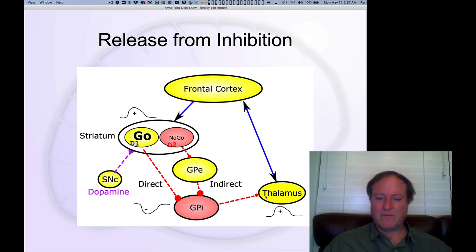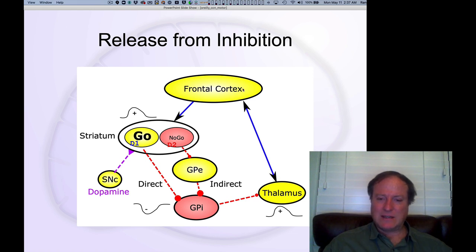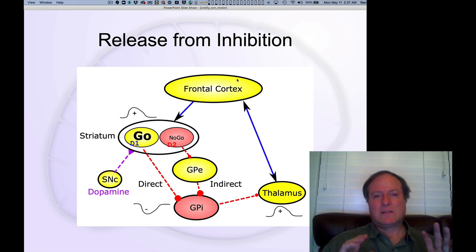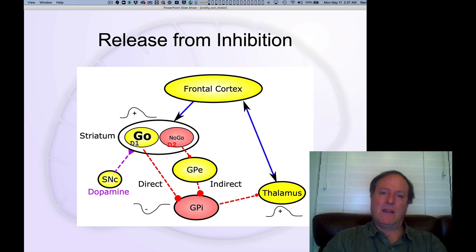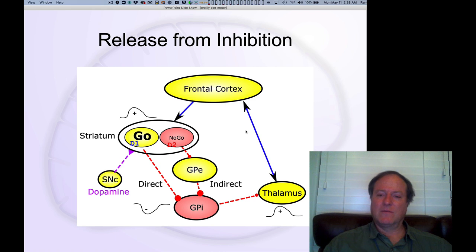These cells have been previously inhibiting the thalamus because they've been tonically active. When they get inhibited themselves, they release the thalamus from that tonic inhibition, and therefore the thalamus gets excited. This completes the bidirectional excitatory loop between the thalamus and the frontal cortex, which is really what we think is the start of this action taking over and driving behavior through downstream effects.